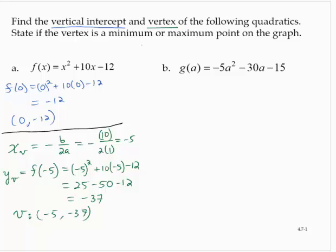State if the vertex is a minimum or maximum point on the graph. Well, since a is equal to 1, since a is positive, the parabola opens up. And so then the vertex is a minimum.